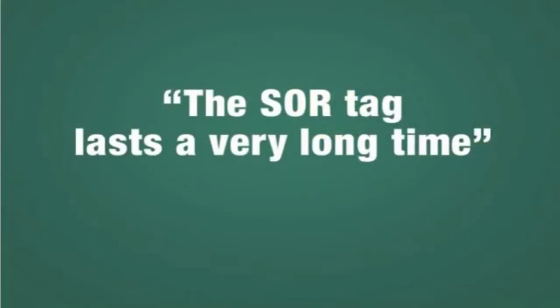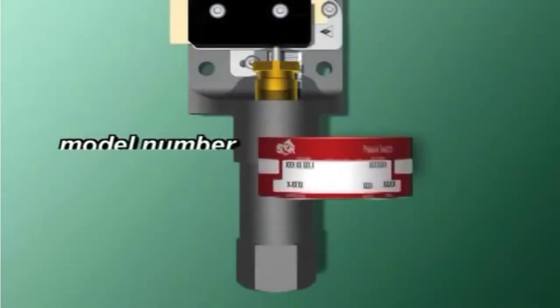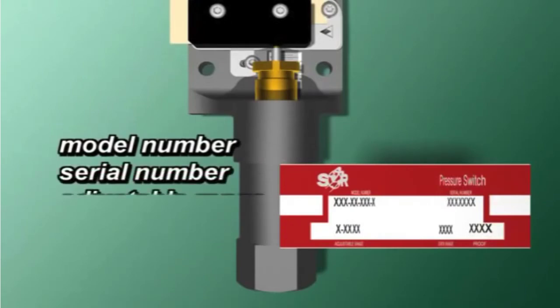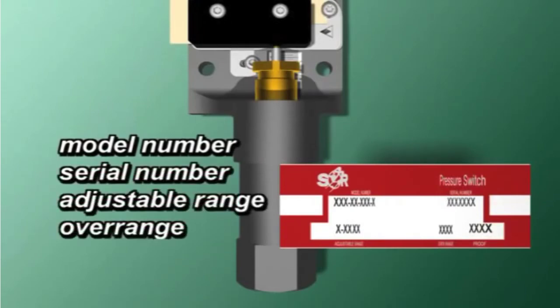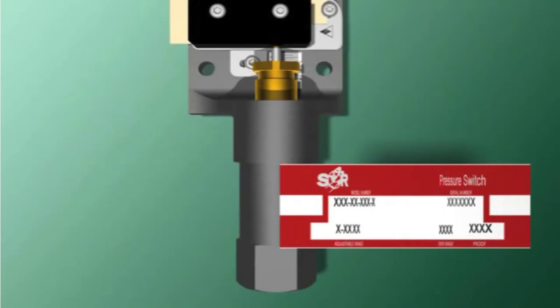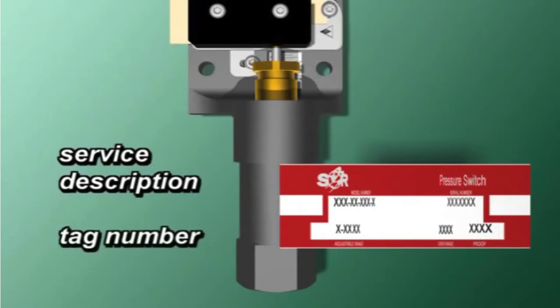And last, we come to the tag. SOR thinks of the little things, too. In addition to the model number, serial number, adjustable range, overrange, and proof, the tags can be customized to include customer information like service description and tag number, for example.